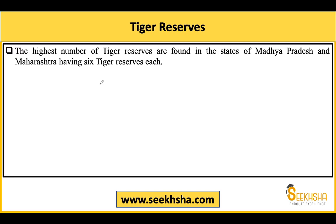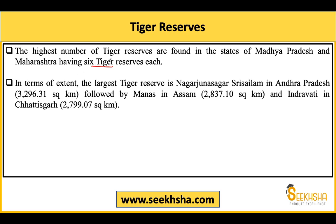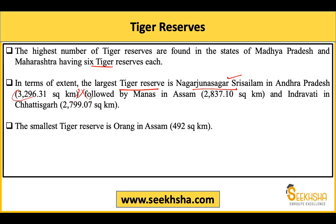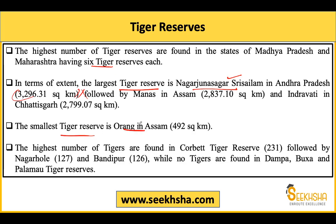Sabse zyada tiger reserves jo hain India ke andar, woh 2 states ke andar hain - MP aur Maharashtra, in dono ke paas 6-6 tiger reserves hain. Largest tiger reserve hai Nagarjuna Sagar Srisailam Tiger Reserve, Andhra Pradesh ke andar, followed by Manas (Assam) aur Indravati (Chhattisgarh). Smallest tiger reserve hai Orang Tiger Reserve, Assam ke andar. Sabse zyada tigers Corbett Tiger Reserve ke andar milte hain, followed by Nagarhole aur Bandipur. Kuch tiger reserves hain jahan tiger reporting nahi hui - Dampa, Baksa, aur Palamu.